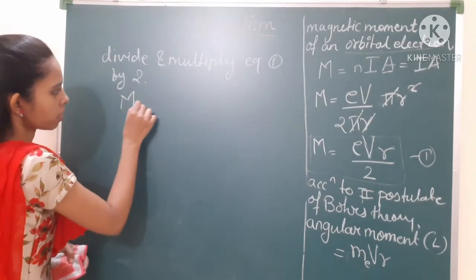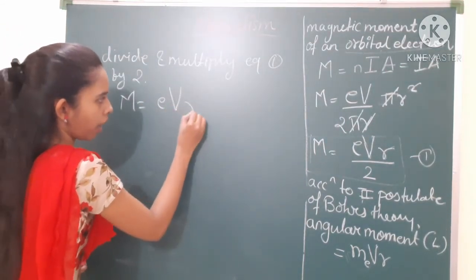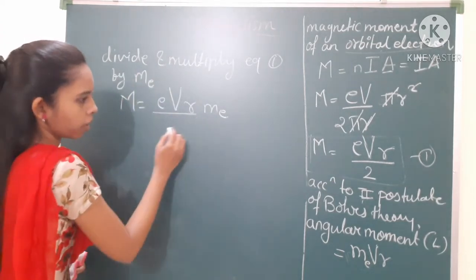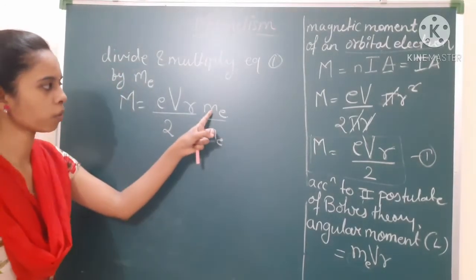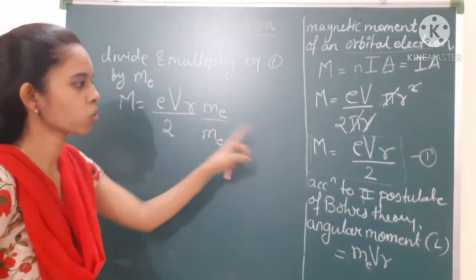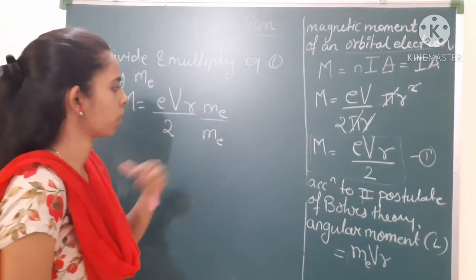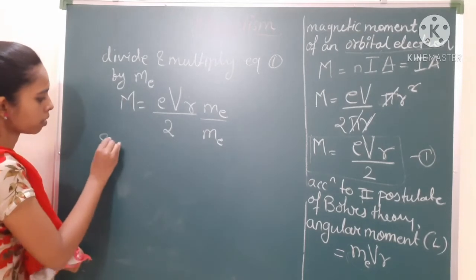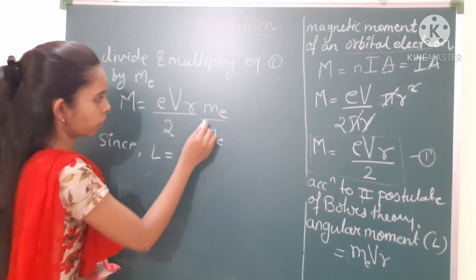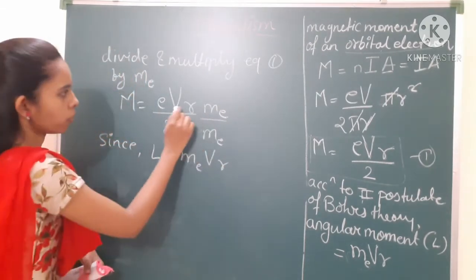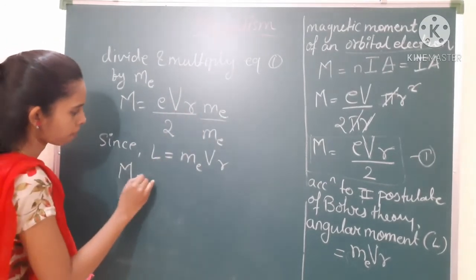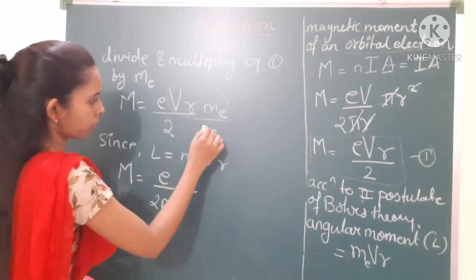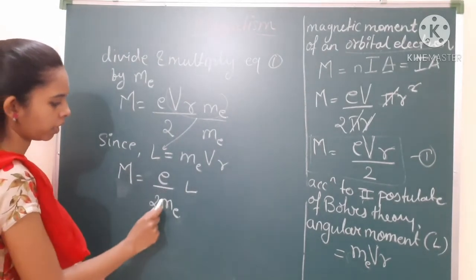By applying this — multiplying and dividing by the mass of electron m — we get M = (evr·m)/(2m). This does not change the significance of the equation. Since L = mvr, the term mvr in the numerator becomes L. So therefore we get M = eL/(2m), which can also be written as M = (e/2m)·L.